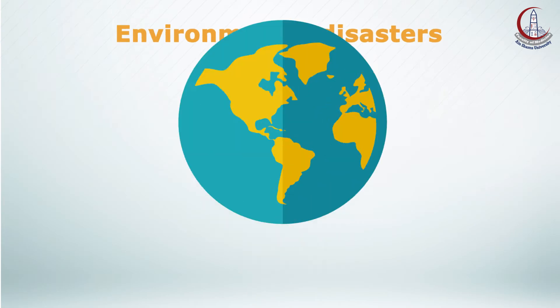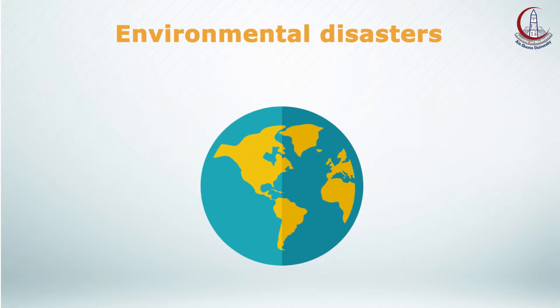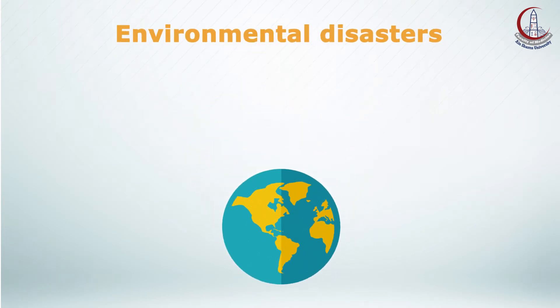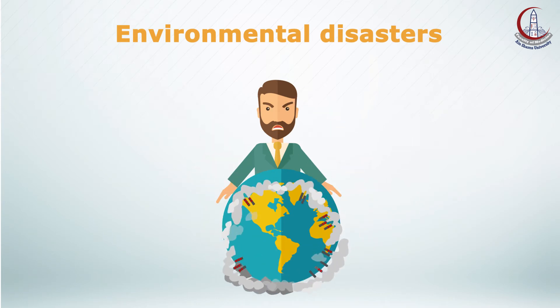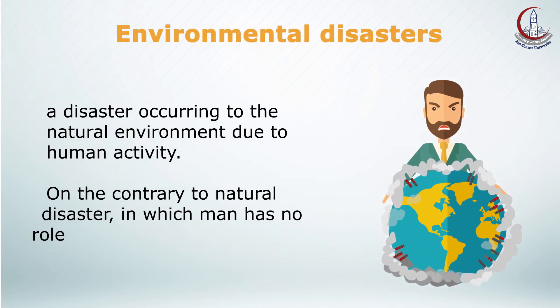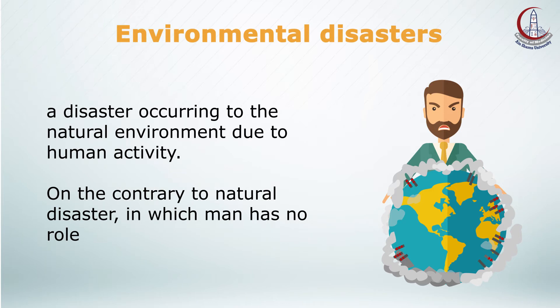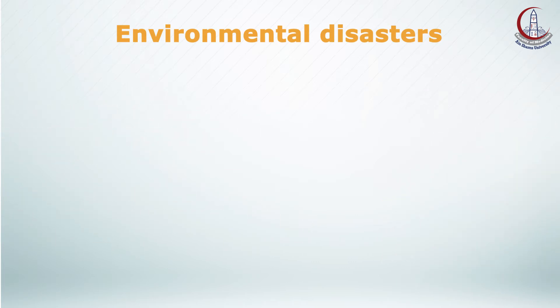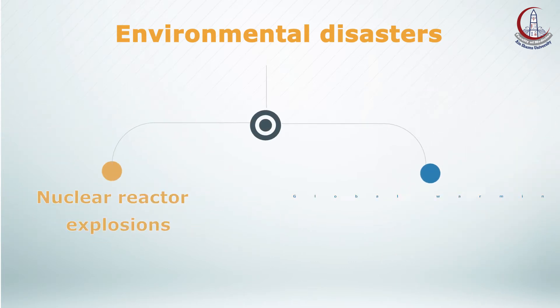The second type of disaster is the human-made or environmental disaster. The environmental disaster is a disaster occurring to the natural environment due to human activity, on the contrary to natural disasters in which man has no role. Environmental disasters include nuclear reactor explosions and global warming.